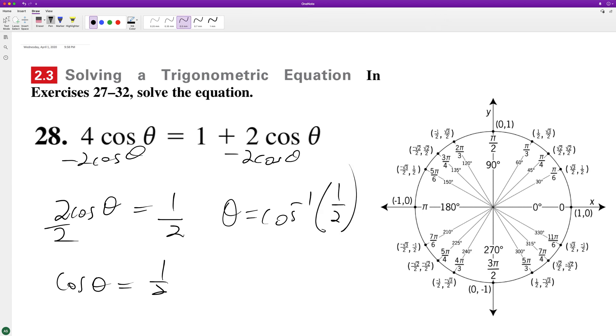Cosine is X over hypotenuse. So it's going to be X over R and here's the Y.